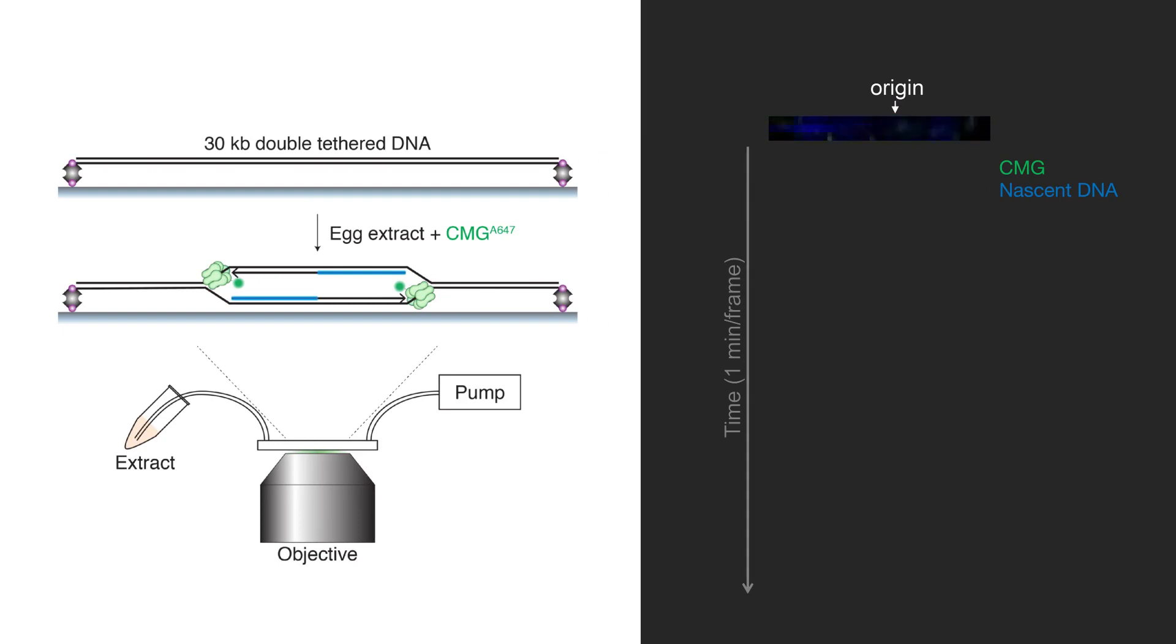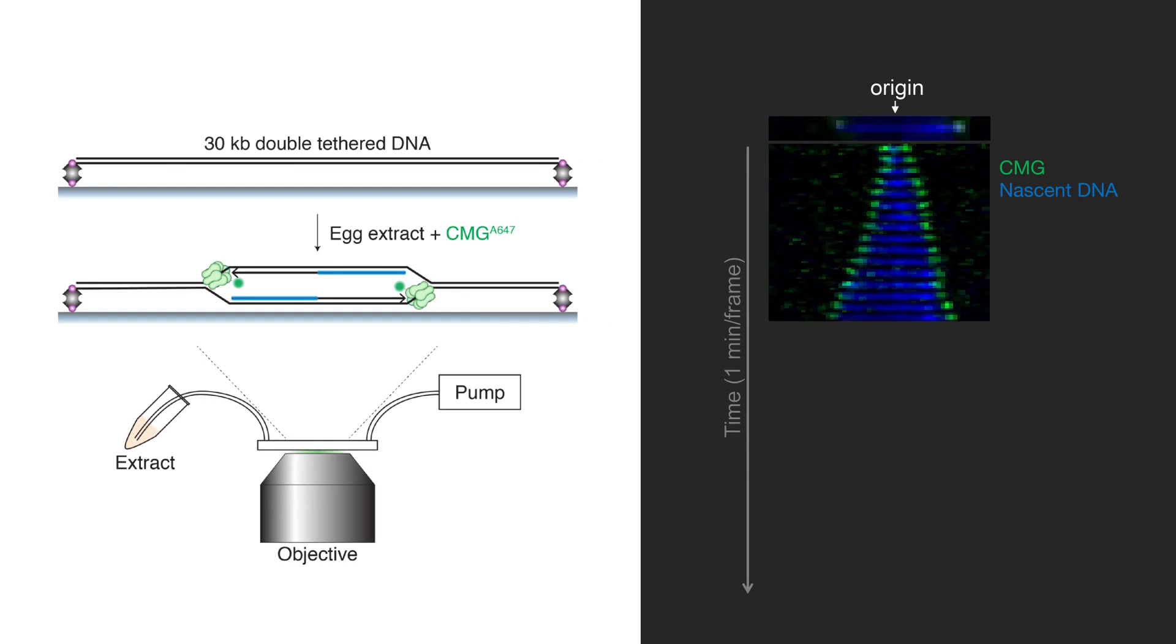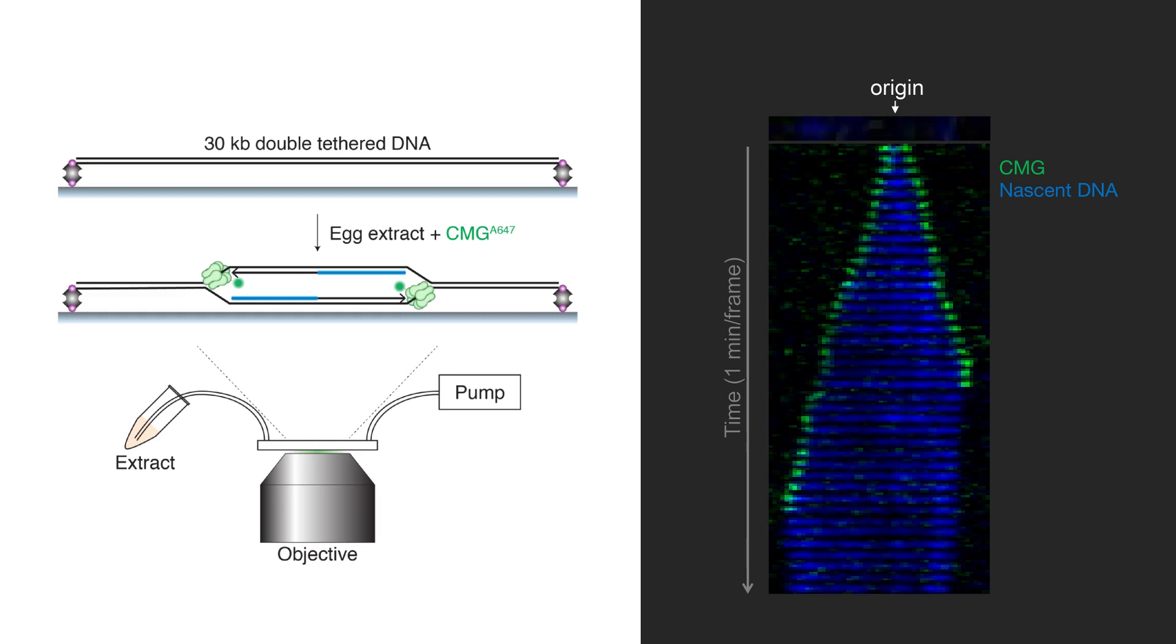When he looked at undamaged DNA templates, he saw that two helicases are assembled at an origin of replication and then travel away from the origin ahead of newly synthesized DNA, which is marked in blue.